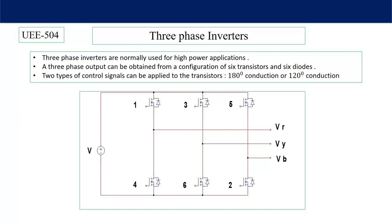Based on the switching signals given to the switches, there are two basic modes of operation: 180-degree conduction mode and 120-degree conduction mode. The difference is only the duration of conduction. In 180-degree mode every switch conducts for 180 degrees; in 120-degree mode every switch conducts for 120 degrees. You must be cautious about short-circuiting the legs — if switch 1 is on and switch 4 is also turned on, there will be a dead short circuit and the source or load may be damaged.